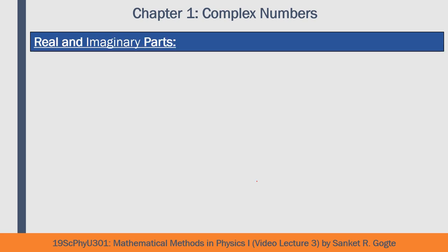First, real and imaginary parts of a complex number. We define a number i, called the imaginary number, equal to the square root of minus 1. It is obvious why it is called imaginary: a real number, whether positive or negative, when squared always gives a positive number. But if we square i we get minus 1, which is not possible for a real number, and therefore i is definitely not a real number.